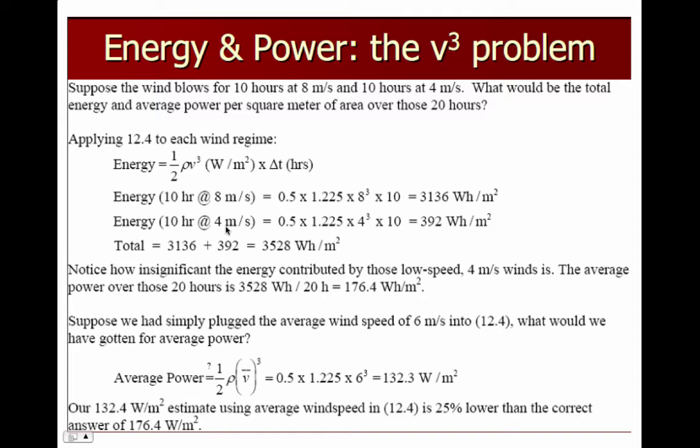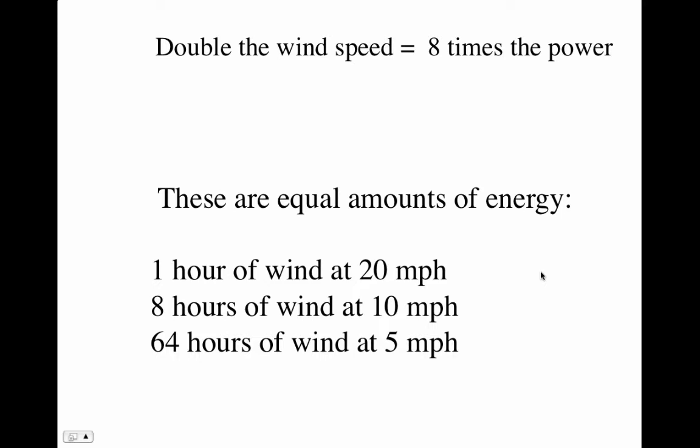There just isn't very much energy in low-speed winds. You'll often find wind turbine manufacturers bragging about how much energy their turbines will make in low speed winds, but there just isn't that much energy available there to collect, unless you just need small amounts of energy for a boat or a cabin. Here's another way to think about this: one hour of wind at 20 miles per hour equals eight hours of wind at 10 miles per hour, equals 64 hours of wind at 5 miles per hour.